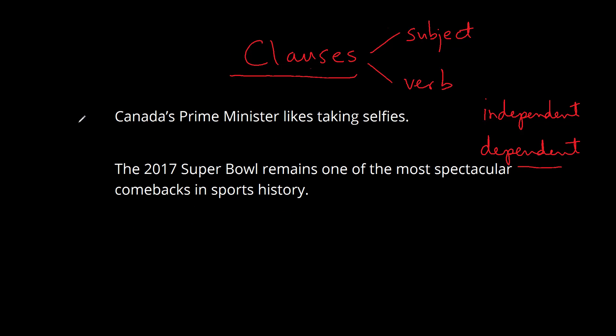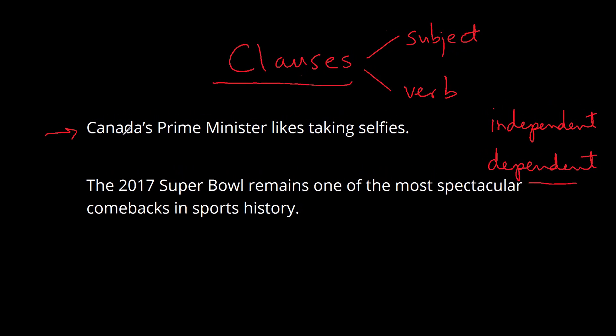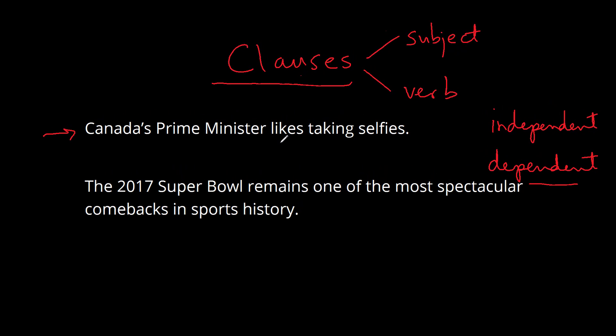So if you look at these examples, the first one reads, Canada's Prime Minister likes taking selfies, and this one has a verb. It has a subject who is doing the action, and then it has some extra stuff. In this case, we have a direct object, and we have an object complement in selfies. So that's the first one.